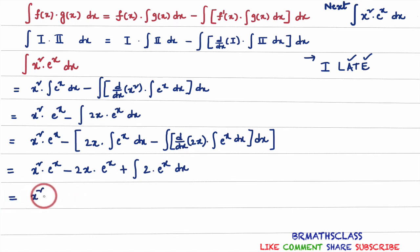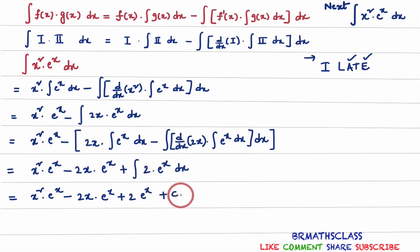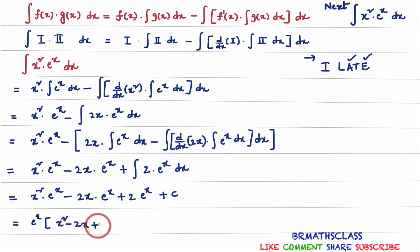If we simplify this further, you will get x squared into e power x minus 2x into e power x. Here, 2 is a constant, so take 2 outside the integral. What is remaining is integral of e power x dx, which equals e power x. I will write the integration constant plus C. You can stop here, or take e power x common to get: e power x times (x squared minus 2x plus 2) plus C.